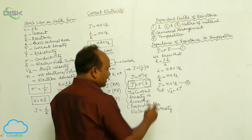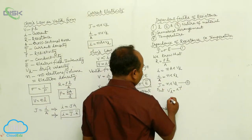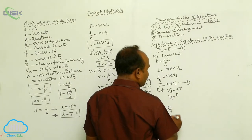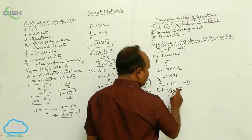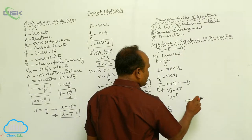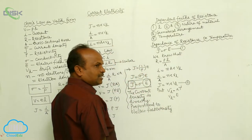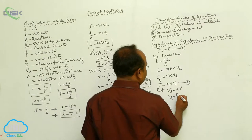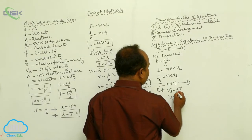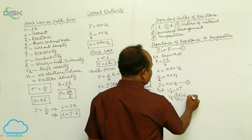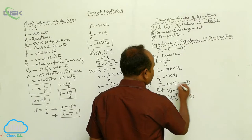Here in this case, V D is equals to E Q by M. Instead of Q, there is the charge of the electron. Therefore, V D is equals to E E by M into tau. This is called the third equation.